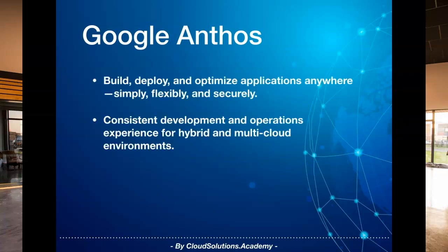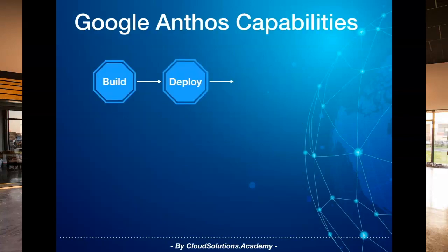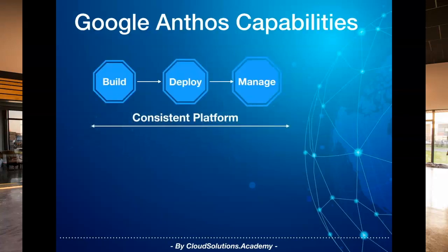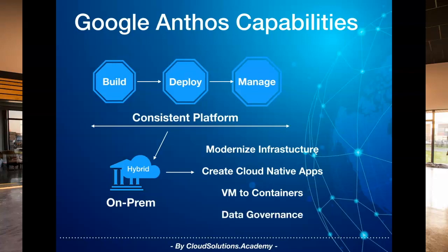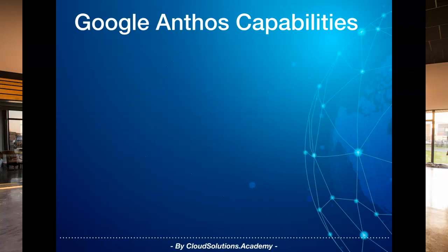From a capability perspective, Google Anthos provides three key features. First, it allows you to build, deploy and optimize cloud applications anywhere. For instance, if you're an on-prem customer, it provides you an approach to modernize your applications, leverage existing infrastructure, create cloud-native applications, provide migration tools to convert your virtualized machines to container-based solutions, run workloads on premises, and at the same time ensure data governance and various regulation requirements through the use of centralized policies.